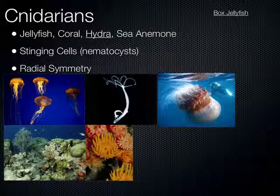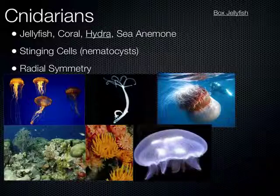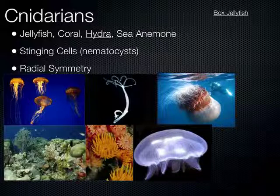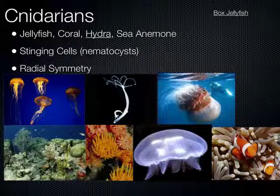Anemones are another polyp-stage cnidarian, with tentacles, stinging cells, and a body opening for food. And again, there are the bioluminescent jellyfish — many of these can live deep in the ocean and produce light to attract prey so they can consume it. The clownfish lives symbiotically with the sea anemone.